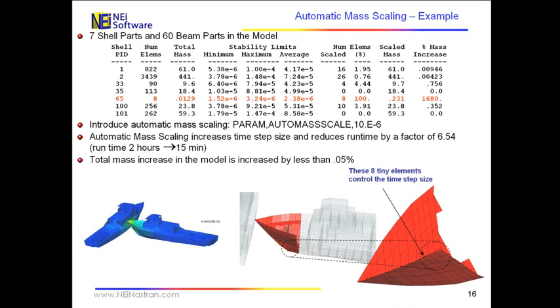So that tells NEI Explicit to go in and find all the elements that have a stable time step that's less than 10 microseconds and scale it, scale their densities so that they scale up to a time step size of 10 to the minus 6.